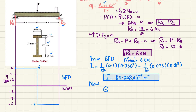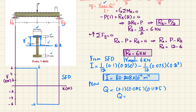Now we find Q at the nail junction, which is the shaded area at the nail location relative to the neutral axis. The area is 100 × 25 mm, or in meters: 0.1 × 0.025. The centroidal distance y-bar from the neutral axis to the centroid of that area is 25/2 plus 100, which is 112.5 mm or 0.1125 m. Solving gives Q = 0.28125 × 10⁻³ m³.